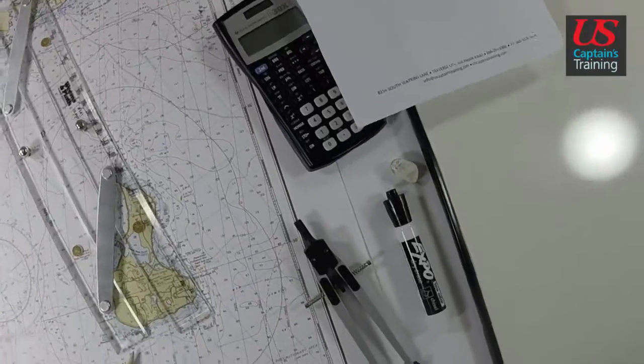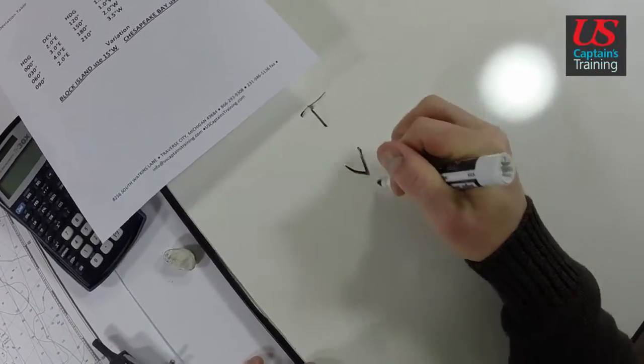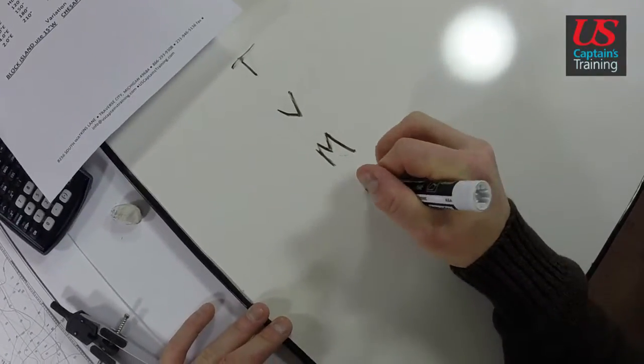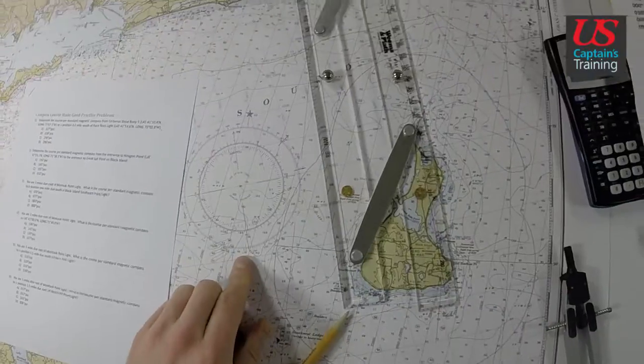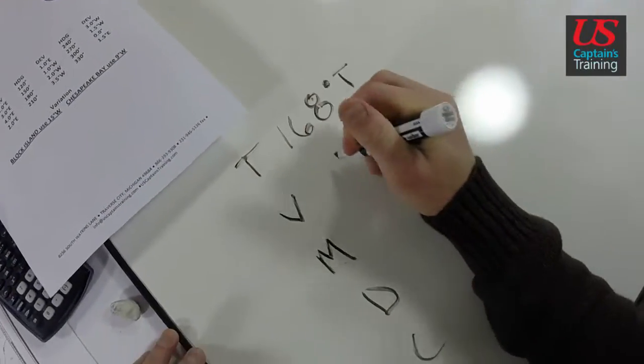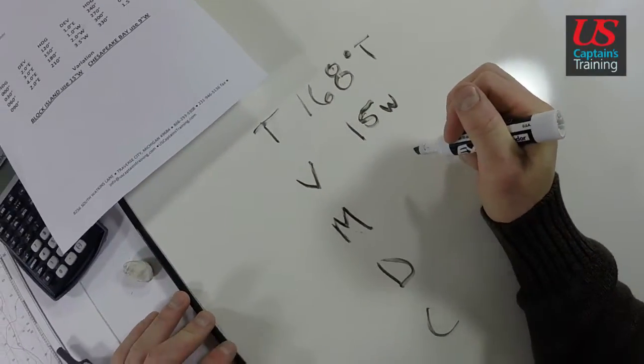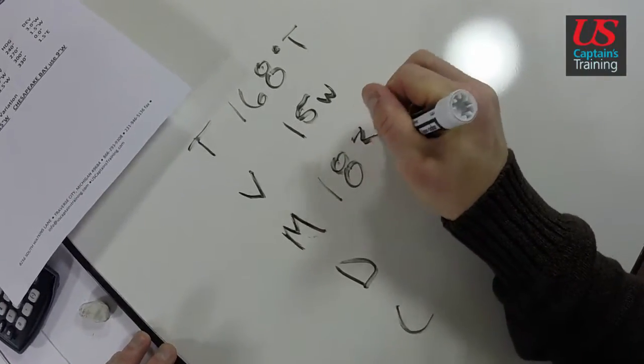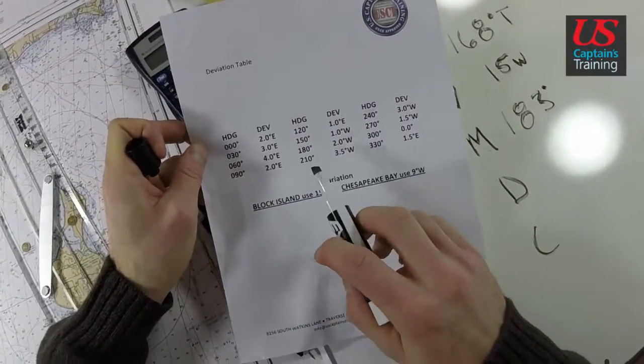So we do TVMDC. We said it was 168 degrees true. Variation we're always using 15 West on this Block Island chart, so 168 plus 15 is 183 degrees magnetic. For 183, our deviation is really close to 180, which is 2 West.